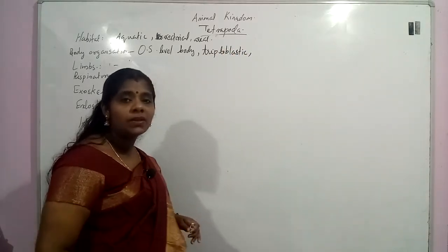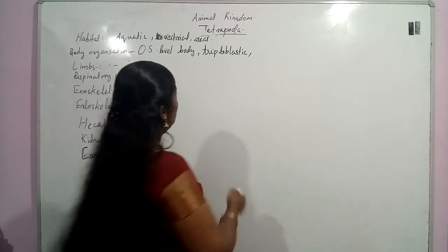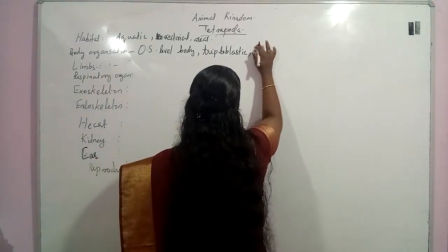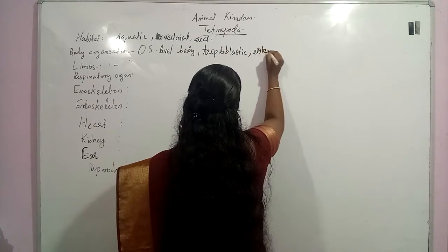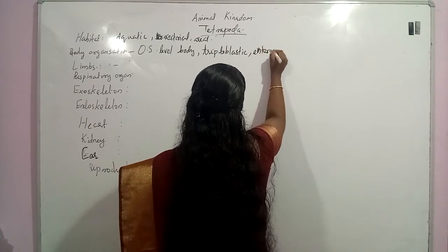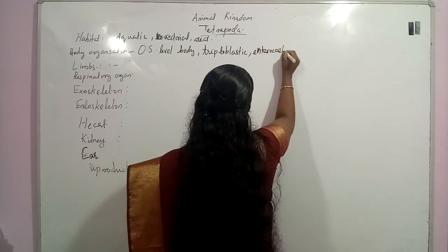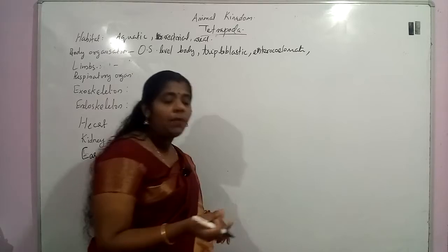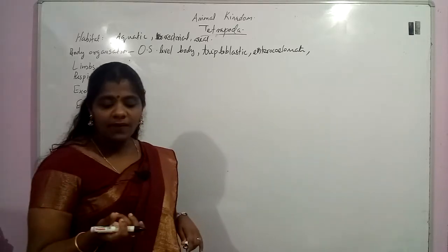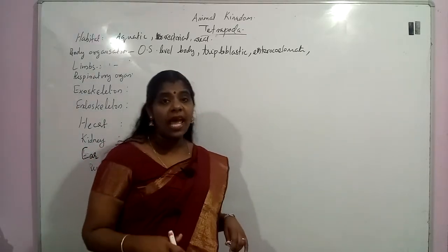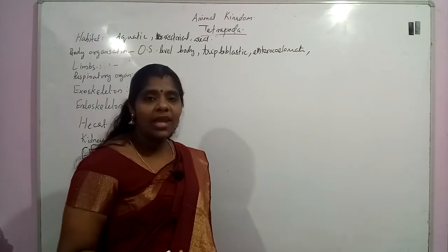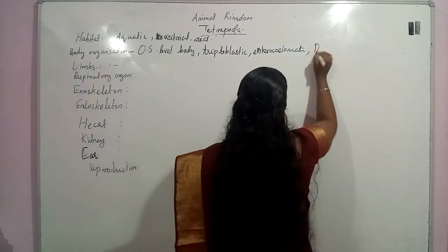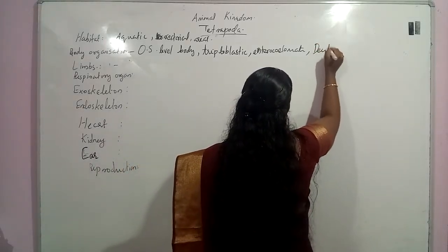They are enterocoelom. They are enterosylomate. This group of organisms — the blastopore will be developed in the form of anus. So they are deuterostomate. This is a characteristic feature of this group.